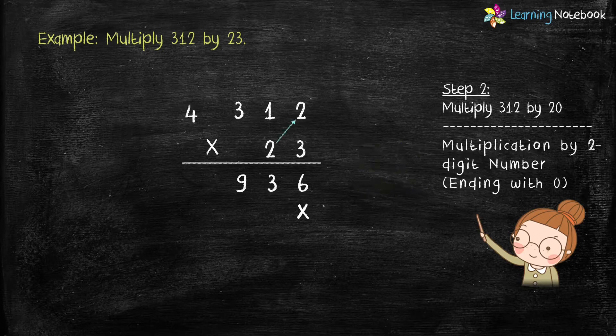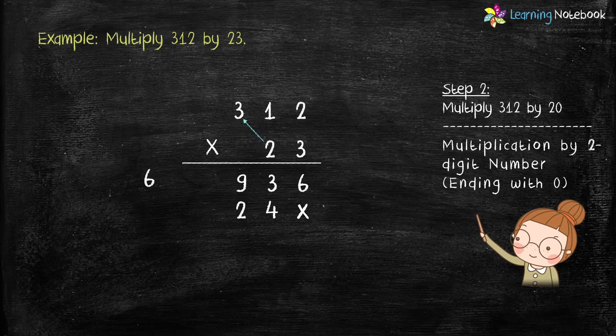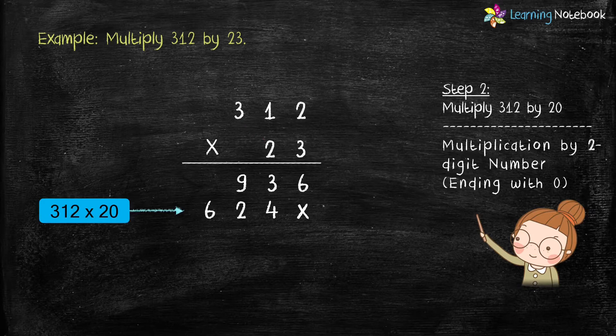2 into 2 equals 4, 2 into 1 equals 2, and 2 into 3 equals 6. So we have completed step 2 and the product of 312 by 20 is 6240.